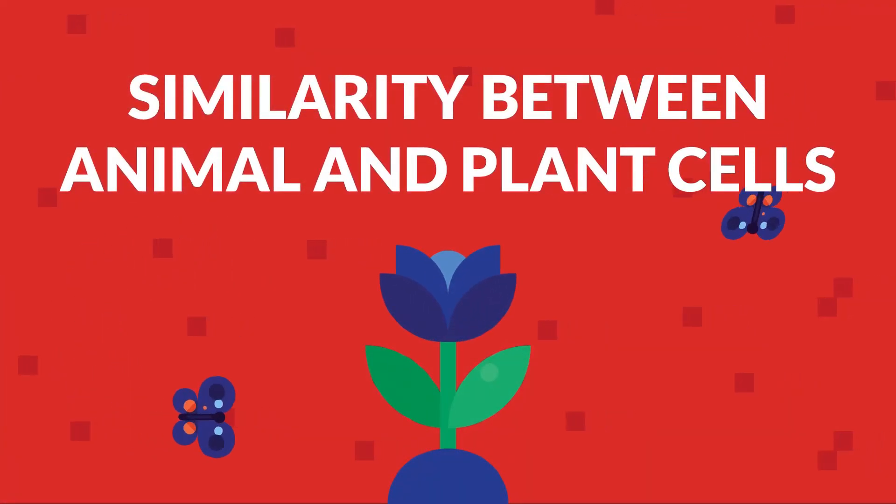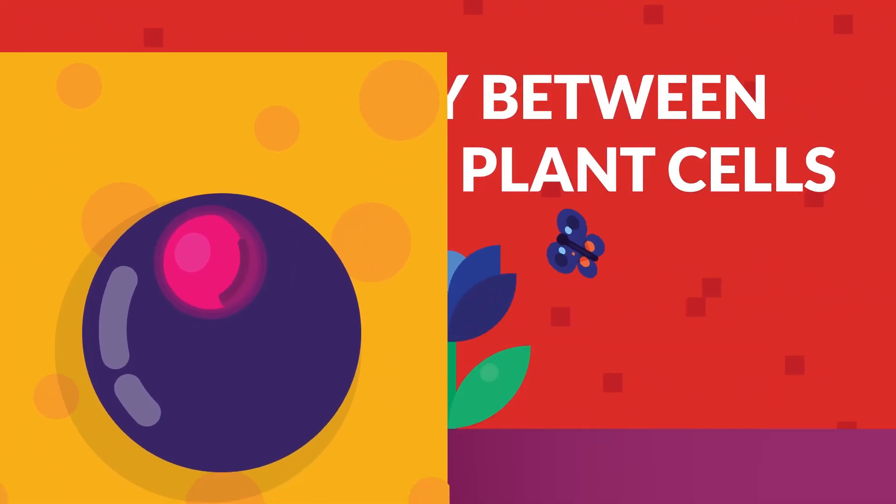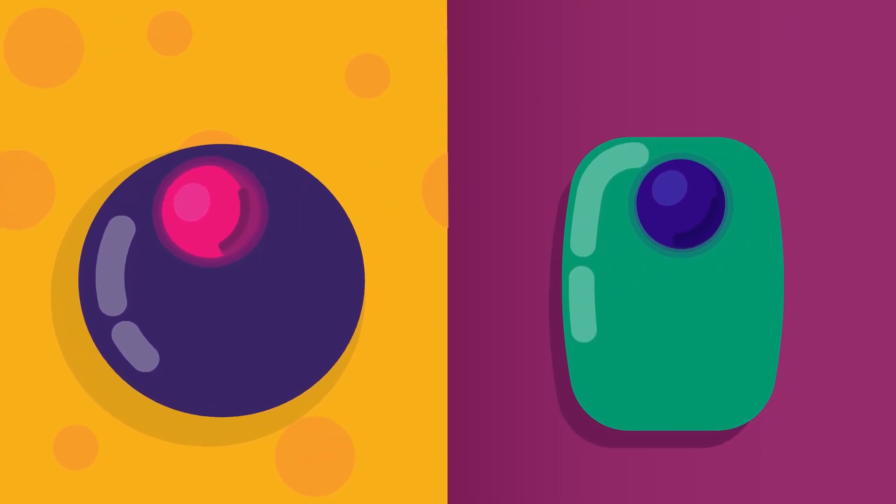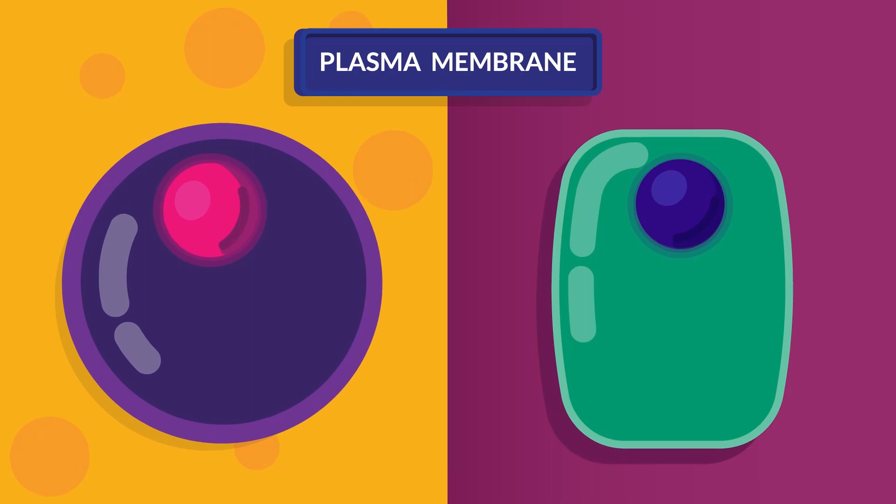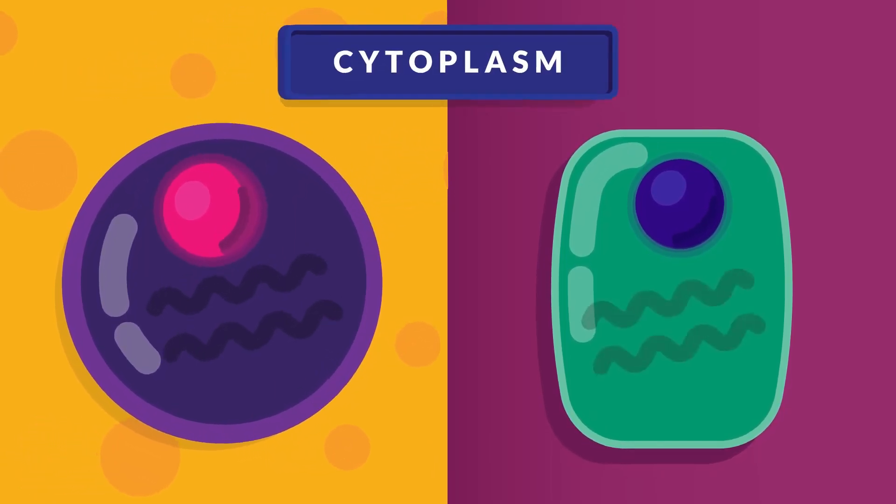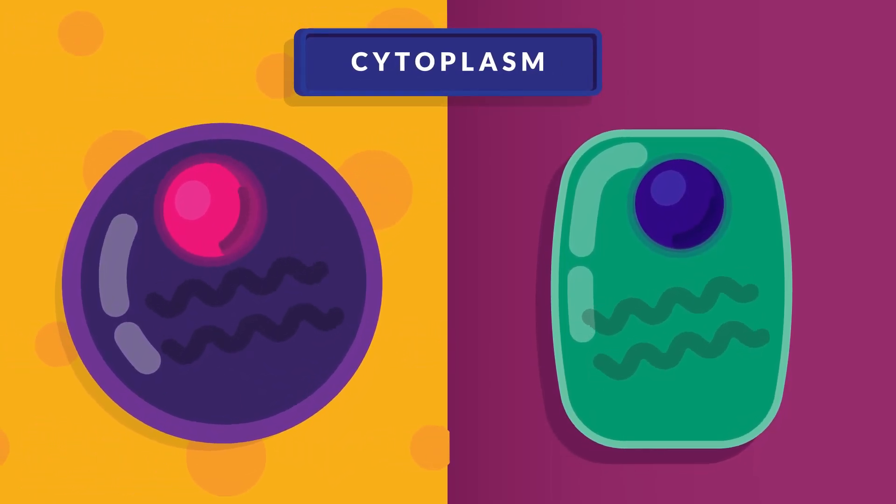Similarities between animal and plant cells: Both animal and plant cells are surrounded by a thin semi-permeable membrane called the plasma membrane. Surrounding all the organelles is the cytoplasm, a jelly-like substance that covers the whole cell from the plasma membrane to the nucleus. Both plant and animal cells have them.